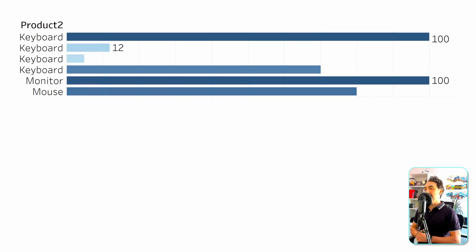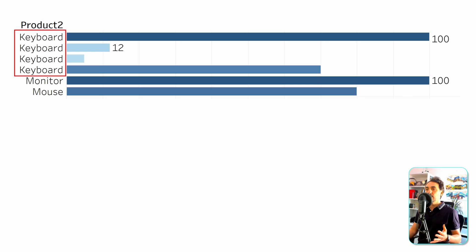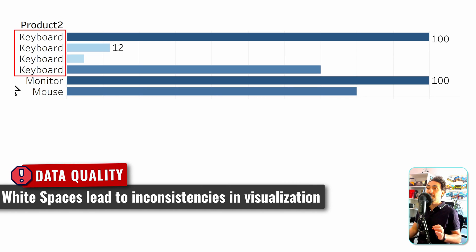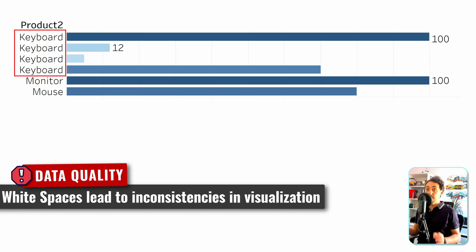We have a scenario with bad data quality. In the products view, we can see the keyboard appears four times. There's no case issue — all values are capitalized correctly — so why didn't Tableau aggregate them into one row? The reason is dirty spaces in the product name. There are unwanted spaces inside 'keyboard' that are really hard to see visually.